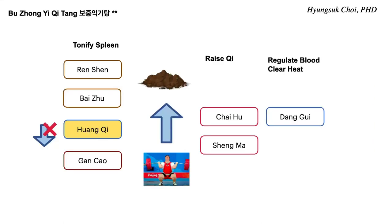The next formula is Bujong Ichi Tang. In this case, Fuling is substituted with Wang Chi. What does Wang Chi do? What is the secret of this formula? So this is kind of a wild card — an empty slot, a module.